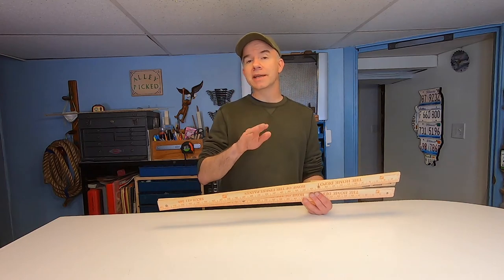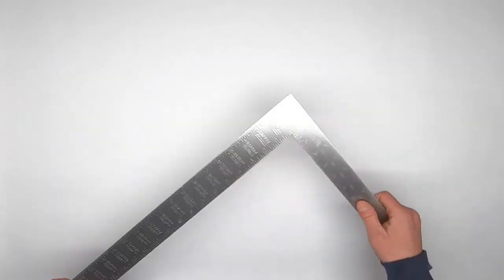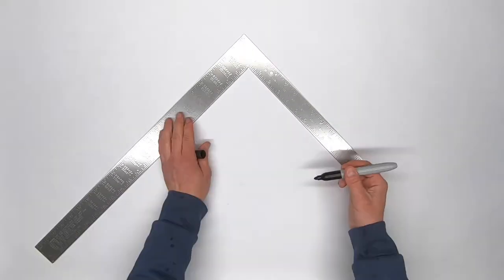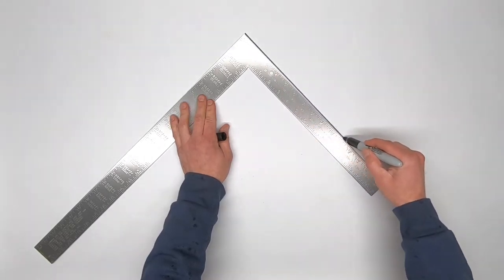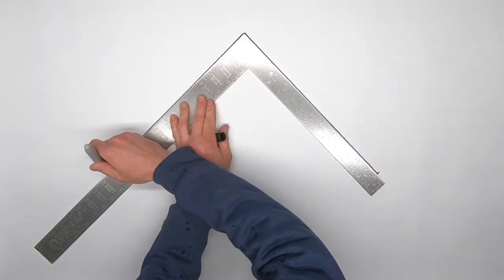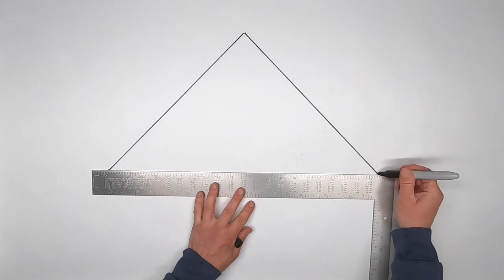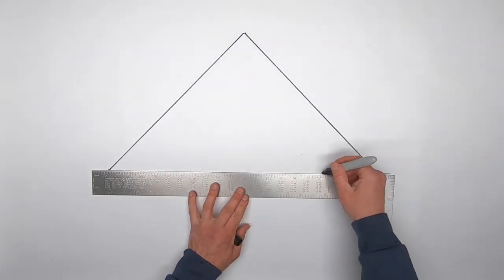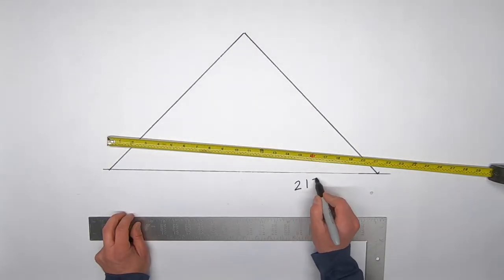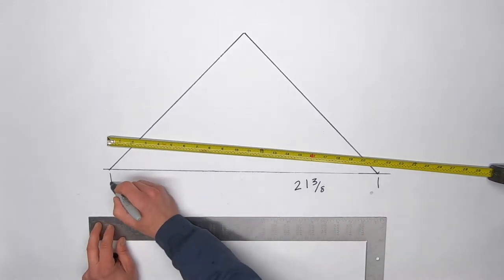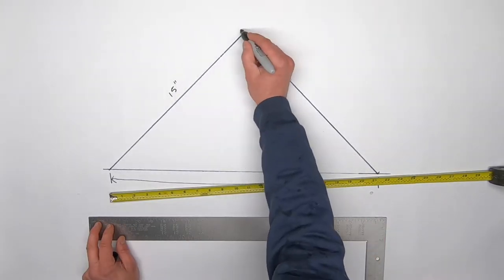Using a framing square, I'm going to draw a right triangle with legs of 15 inches each in length. The long horizontal line at the bottom, that's called the hypotenuse. In my case it's 21 and 3/8 of an inch long.